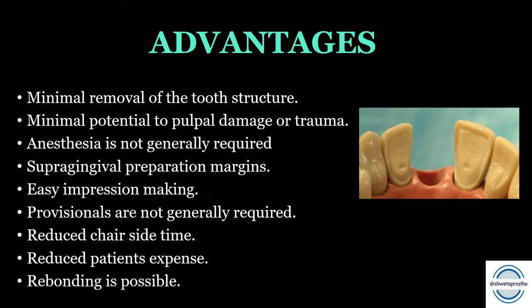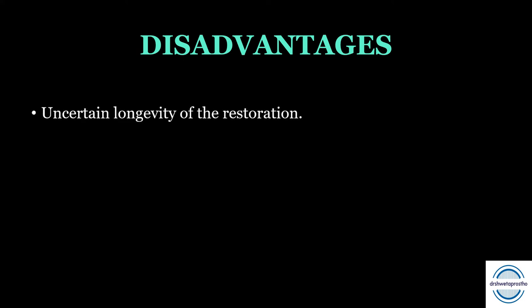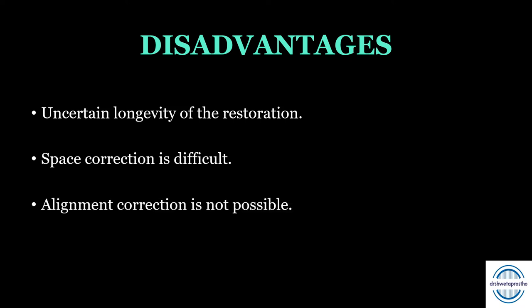Disadvantages of resin bonded bridges: the first main disadvantage is uncertain longevity — the initial success rate is 95% but drops to 80–85% after one to one-and-a-half years. Second, space correction is difficult if there is wider mesiodistal space of the edentulous span. Third, alignment correction is not possible. Fourth, it is considered irreversible — though minimal preparation is done, enough structure is removed to make it irreversible; it is not preparation-less.